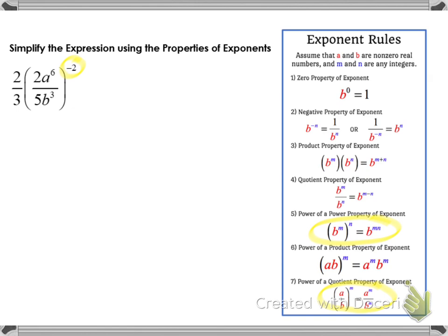The power of a quotient property in rule number 7 tells us that everything in the numerator and everything in the denominator will be raised to that exponent. So we're going to raise both the numerator and the denominator to the negative second power. In the numerator we have 2a to the sixth, so the number 2 and a to the sixth will each be raised to the negative second power. Same for the denominator: the number 5 and b cubed will be raised to the negative second power. When we have a power raised to another power, rule number 5 tells us we multiply our powers.